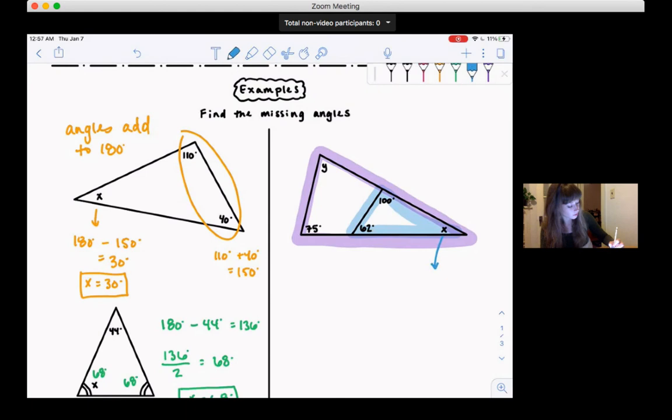So to find x, we're going to do, let's see, we can add 162, so that gives us 162. That's the sum of these two. We know all three together make 180, so let's do 180 take away 162. And we get 18. So x is equal to 18 degrees.